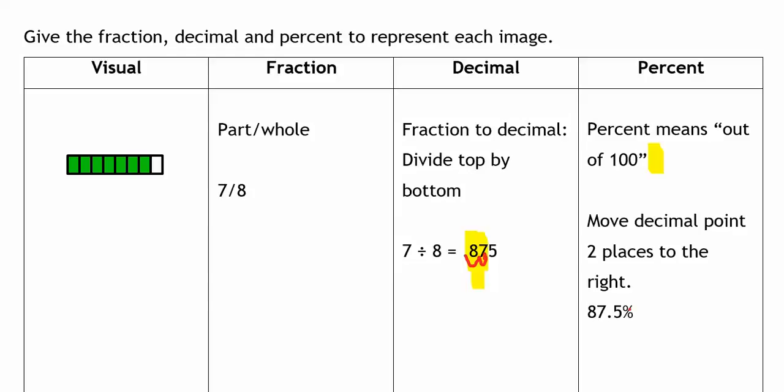So we now have the same value displayed in three different ways. Seven-eighths is equal to 0.875, which is equal to 87.5%. Use this as an example to complete your worksheet.